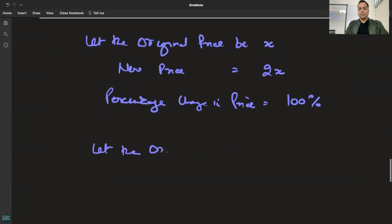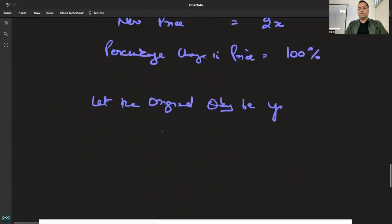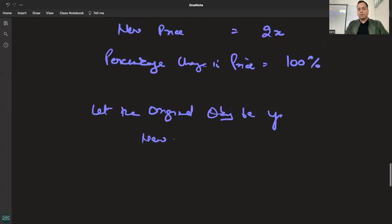Then, let the original quantity be Y. The quantity supplied increases by an amount equal to four times of the original quantity. 4 times, so new quantity is equal to...